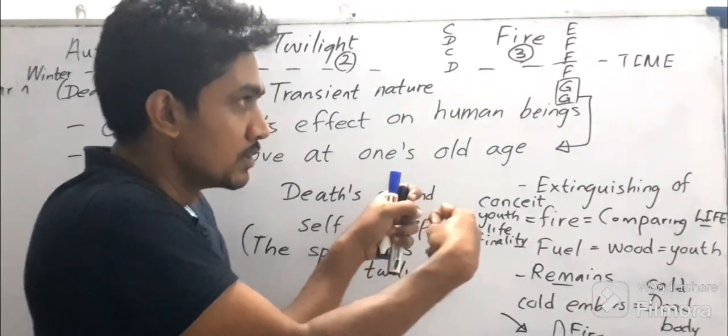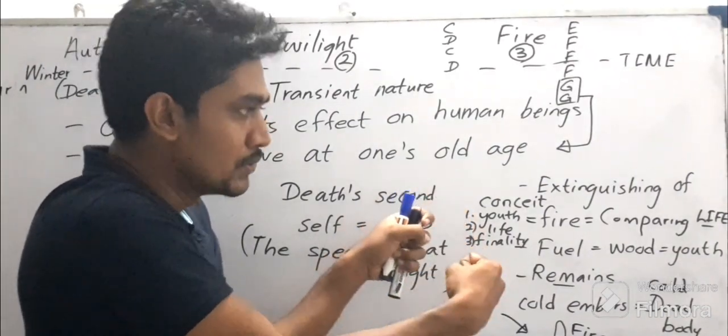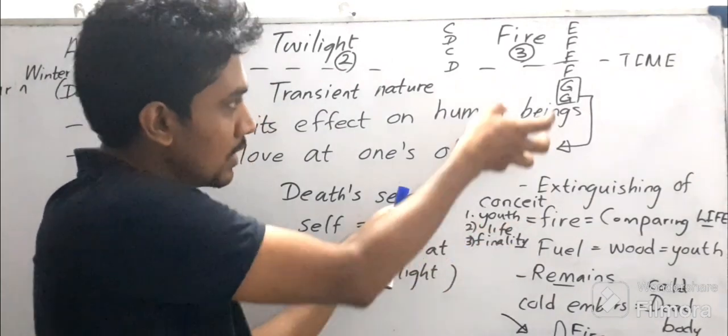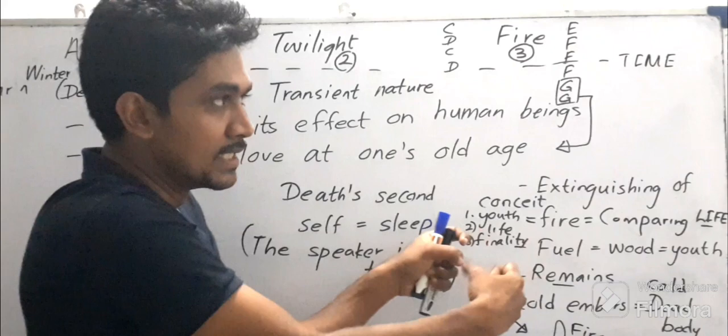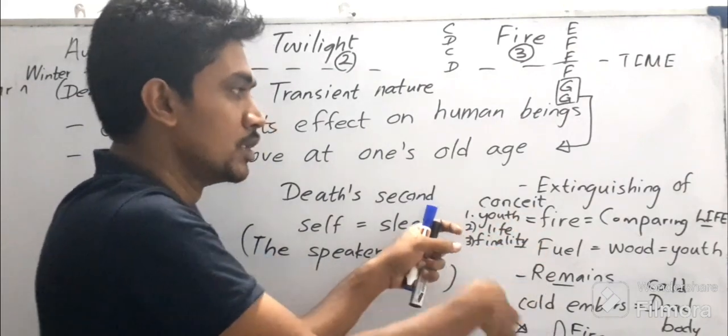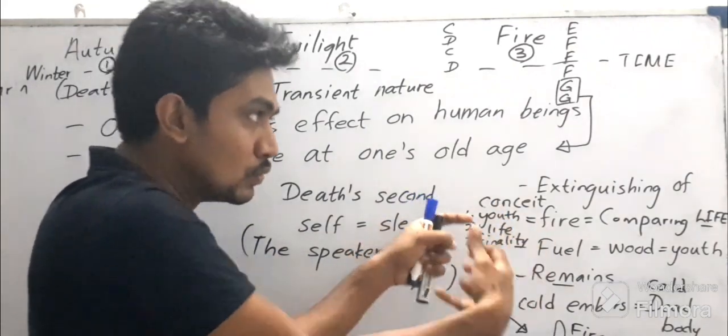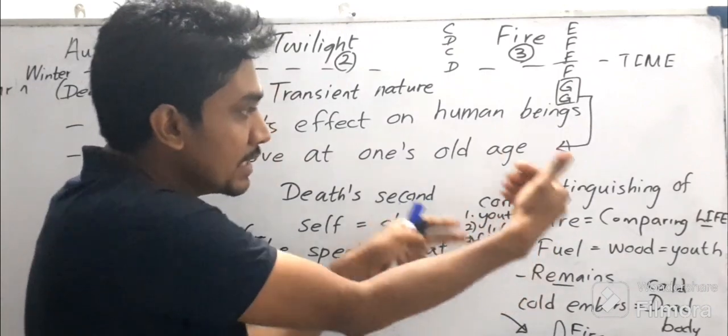In youth, to make the fire we need the wood. Wood means the youth, the vigor, the energy. So once you consume, once you use your energy, the human life, the desires come out.